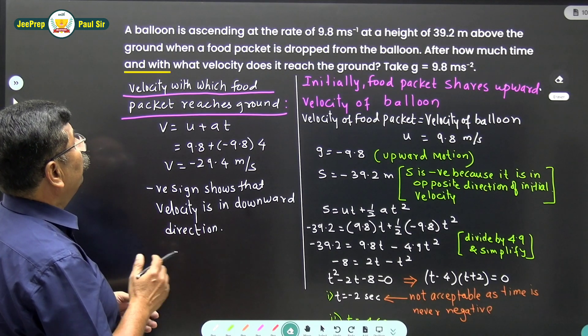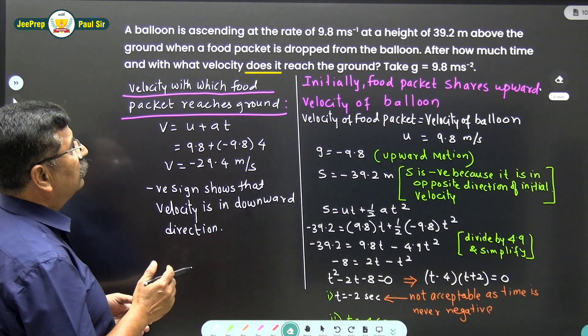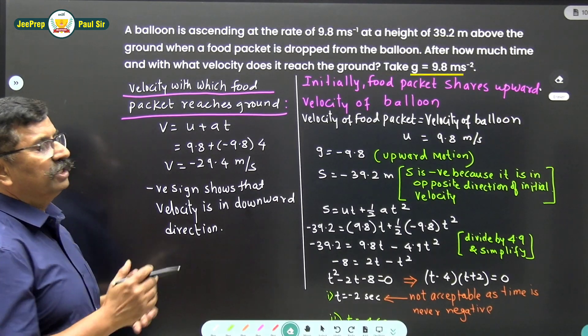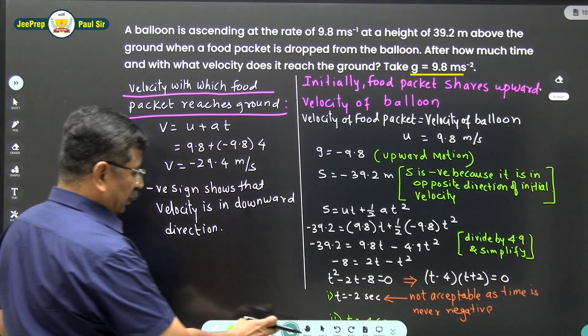After how much time and with what velocity does it reach the ground? Take g equals 9.8 meter per second squared.